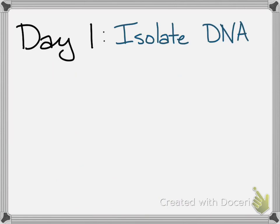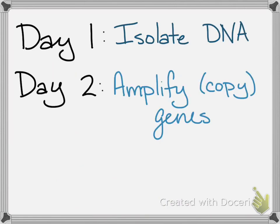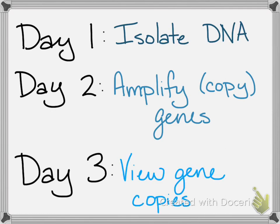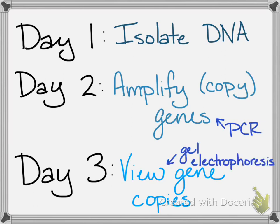The lab has three parts. On day one, we're going to isolate the DNA. On day two, we're going to amplify — which is just a fancy way of saying we're copying the genes. And on day three, we're going to view the gene copies. There are two big biotech protocols we're going to be trying: PCR, or polymerase chain reaction, and gel electrophoresis. You can find out more about those through other videos I'm going to show you so you can actually see them at work.